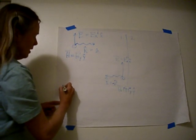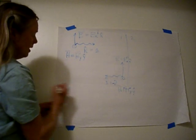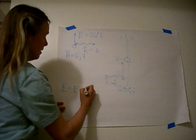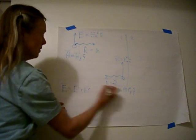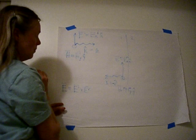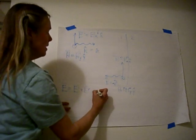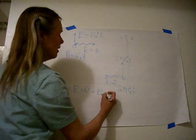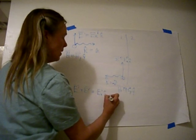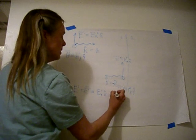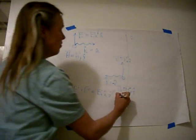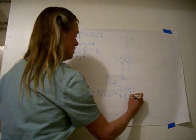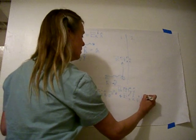The electric field in this region, in region number one, can be written as the incident field plus the reflected field. Let's put reflected right here, incident right there. So this is going to be equal to the Ex incident in the x direction, and it's propagating into the e to the minus gamma z. The reflected field is Er, also in the x direction, e to the plus gamma z.